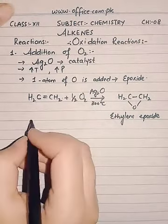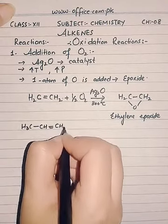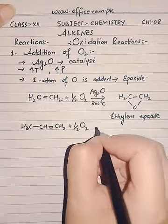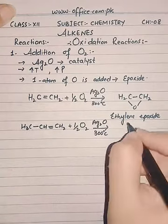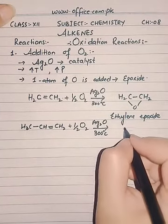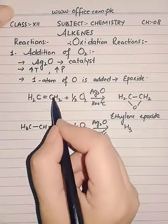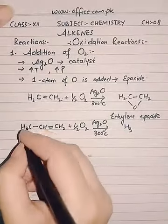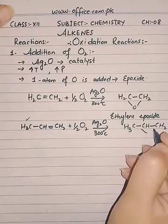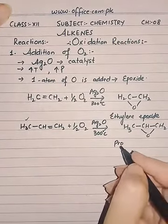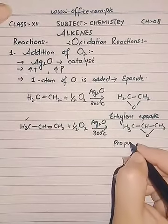The next example is of propene. With the same catalyst and temperature conditions, the product will be — keep in mind that oxygen will only be concerned with the carbons that are participating in the double bond, so it will not touch the other carbon. This will be propylene epoxide.